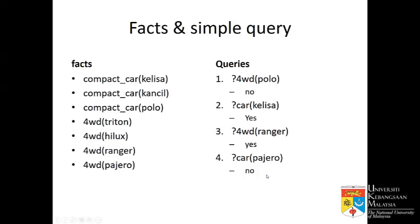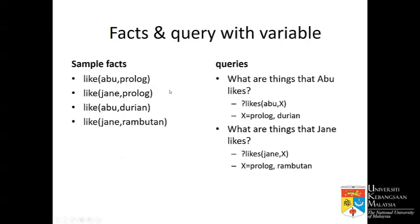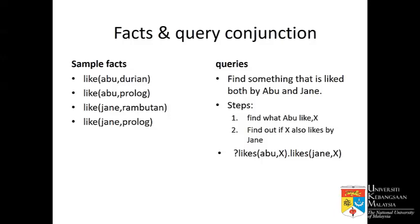Next, simple facts: Abu likes Prolog, Jane likes Prolog, Abu likes Durian, Jane likes Durian. We can ask: what does Abu like? Prolog will output X as Prolog and Durian, because Abu likes both. What are the things Jane likes? The compiler looks at the knowledge base and finds Jane likes Prolog and Jane likes Rambutan. Now let's say we want to find something liked by both Abu and Jane. The X in 'Abu likes X' and 'Jane likes X' must be the same.